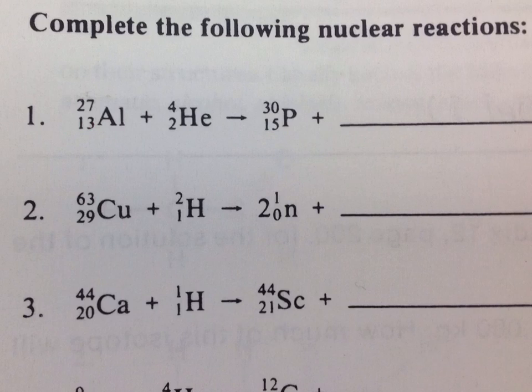As we look, we have a mass of 27 for aluminum, and we have a mass of 4 for our helium. Remember that our helium is an alpha particle. So what we have is 27 plus 4, which gives us 31. Now when we look at the other side, we have the 30. We have 31 on this side, we have 30 on this side. Therefore, we need to include a 1, so that 30 plus 1 would equal our 31.